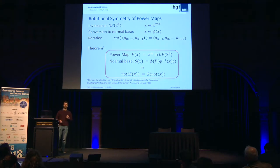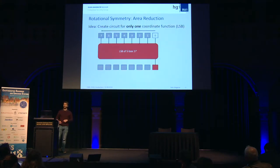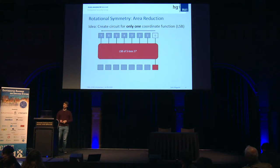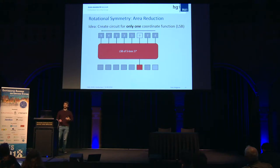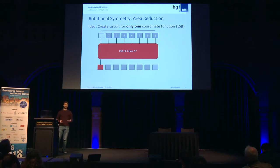Let me illustrate how to use rotational symmetry for hardware implementation. S-star realizes one component of the target S-box. We have all the input bits, and by rotating the input bits by one position we get the next output bit. Doing this repeatedly gives all output bits. We gain a lot from this because we only need to realize the LSB of this S-box in a circuit, not all eight coordinates separately.